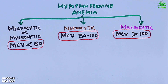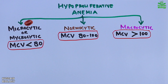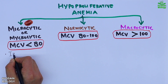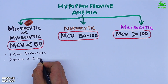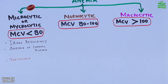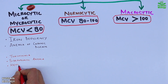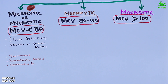In microcytic anemia, RBCs are smaller than normal, and are usually hypochromic — meaning the red blood cells appear paler than usual. The typical causes of microcytic anemia include iron deficiency, anemia of chronic disease, thalassemia, sideroblastic anemia, and hemoglobin E.